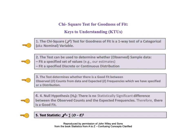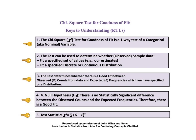The fifth and final KTU gives the formula for the test statistic chi-squared for this test. Chi-squared equals the sum of the squares of the observed minus the expected values. And here on one page are all five keys to understanding the concept of the chi-square test for goodness of fit. You may wish to pause the video at this point and read them all together.